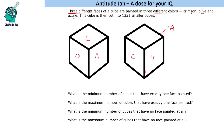The first question is: what is the minimum number of cubes that have exactly one face painted? Since the cube is cut into 1331 smaller cubes, that is 11×11×11, each face will look like an 11×11 matrix. So on each of the three painted faces we have an 11×11 grid.